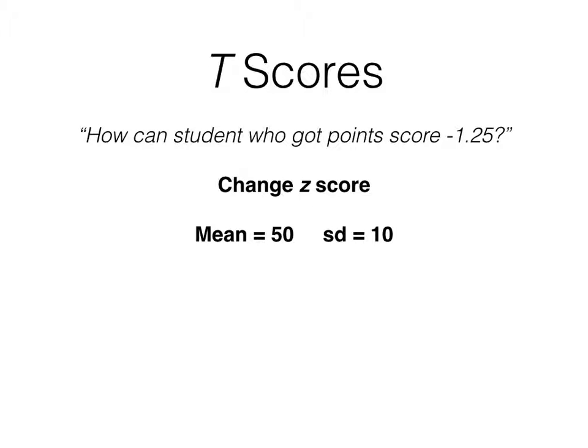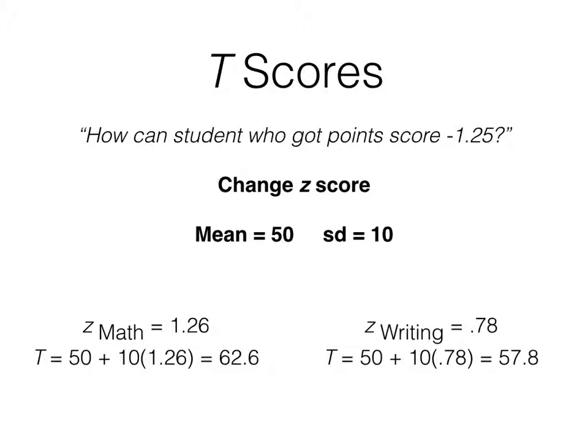So let's see what his math looks like. His z-score on math was 1.26. When I change it to his T-score, his standardized score becomes 62.6. And for writing, I change that z-score to a T-score and it becomes 57.8. It's still really clear that he did much better on his math test than on his writing test.